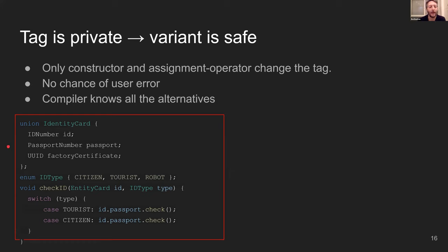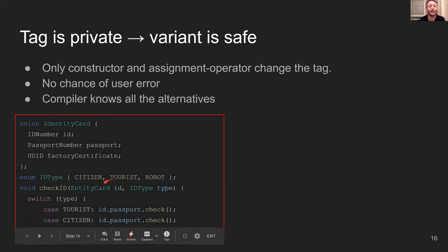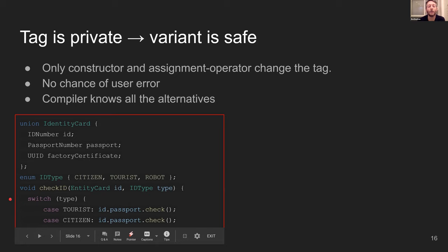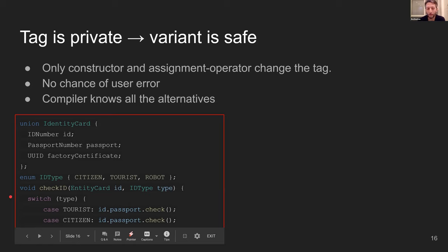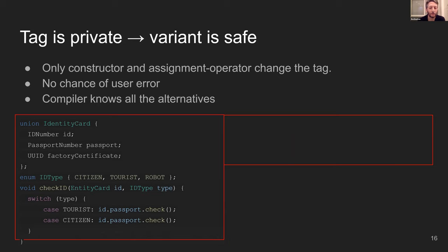A citizen has an ID number, a tourist has a passport number, and a robot has a factory certificate. In C, I can write a check function that receives this union and its type as two separate arguments, and use a switch case to access the right information. Obviously this is not very safe, and I've planted several bugs in this specific code. I'll give you 10 seconds to look for some of the bugs.